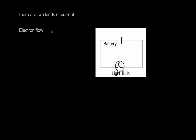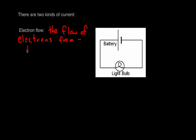There are two kinds of current. The first is electron flow. This is the true current through a circuit. Electron flow is the flow of electrons from the negative terminal of a battery to the positive terminal. So in this diagram, the electron flow comes out of the negative terminal of a battery and flows through the circuit.